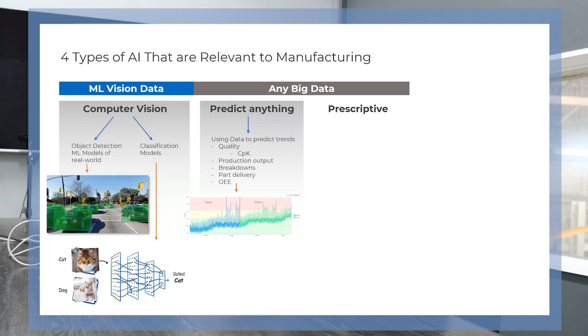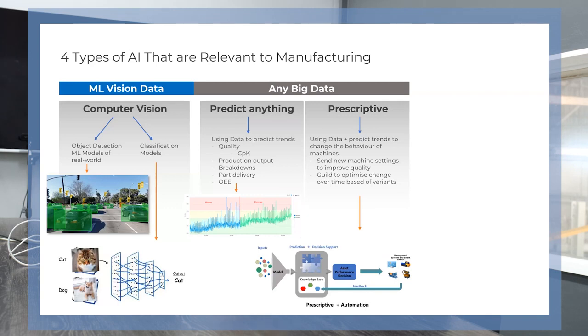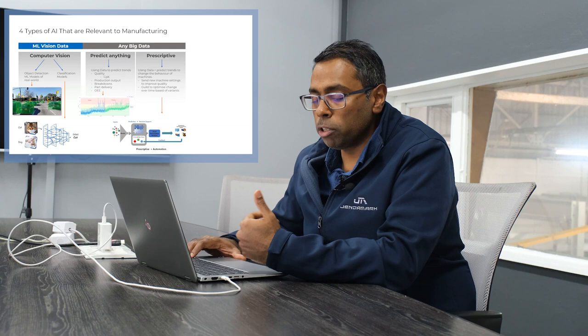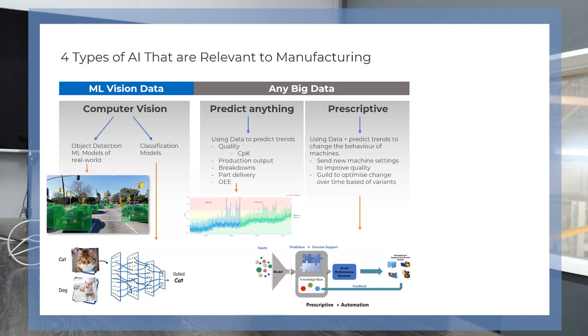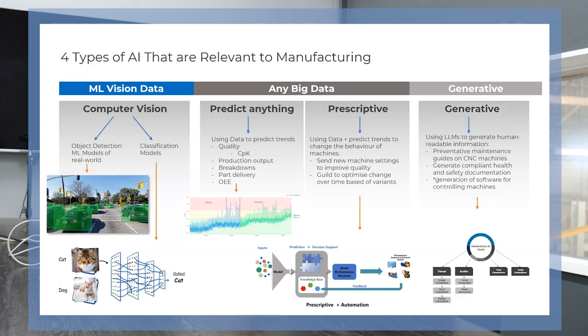The next one is what I would consider the holy grail — this is prescriptive AI. This is where we take data and using the model we've created, we actually determine the specific parameters of a machine to drive specific outcomes. For example, if we want to improve quality, the model will drive parameters within that machine. And then there's also generative AI — chat GPT being a hot topic — but I won't spend too much time on that as there's plenty of content available on the internet.